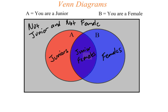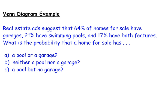That's how you put together a Venn diagram. Now let's put this into practice. Real estate ads suggest that 64% of homes for sale have garages, 21% have swimming pools, and 17% have both features. We have three probability questions to answer.